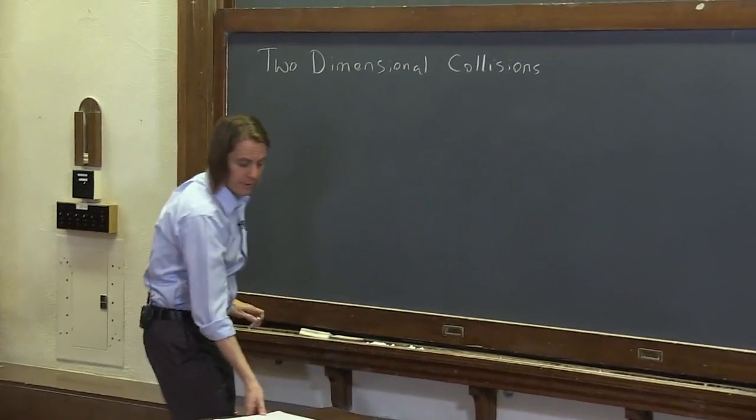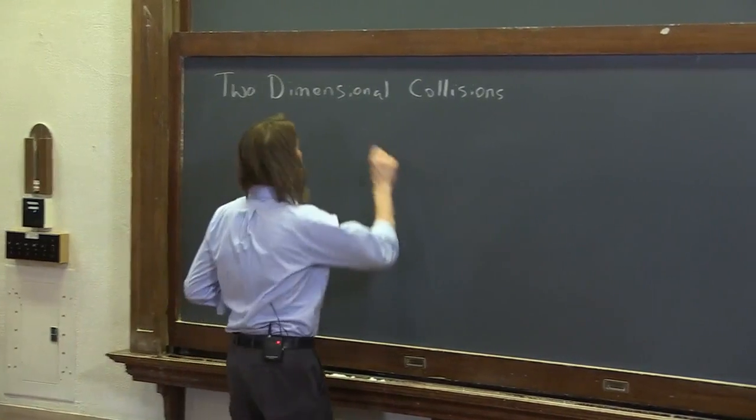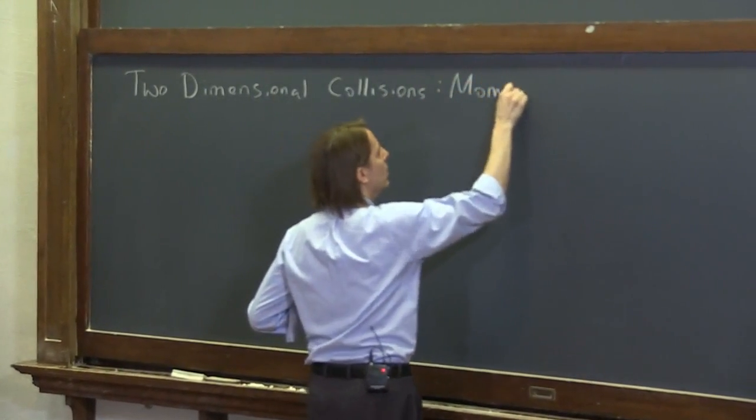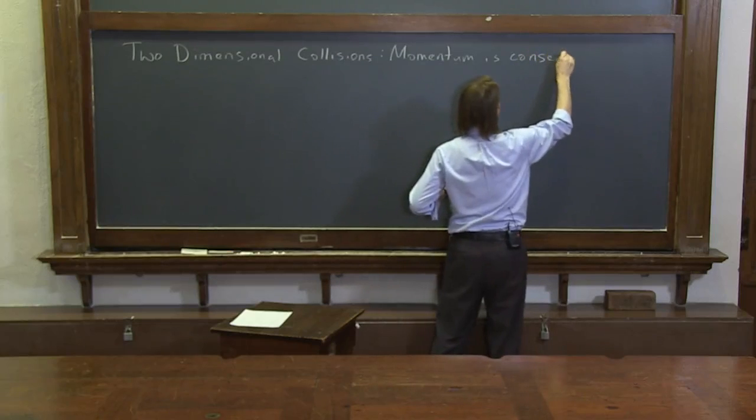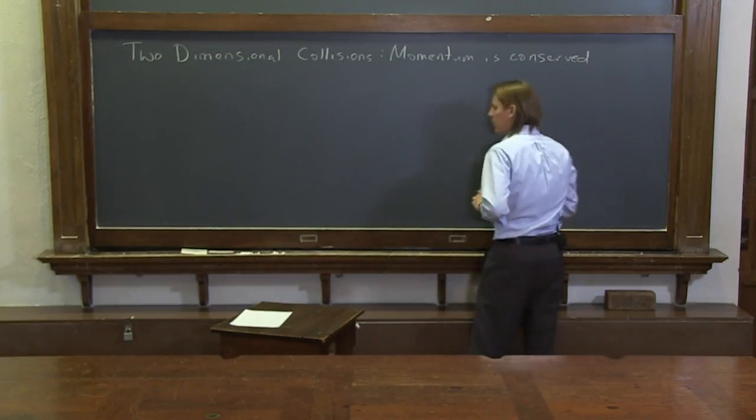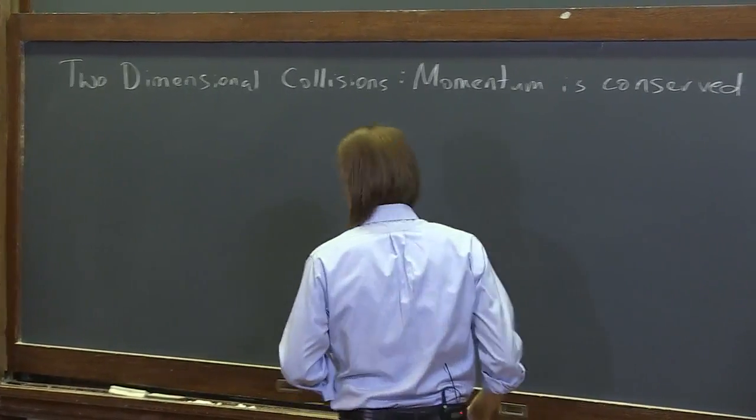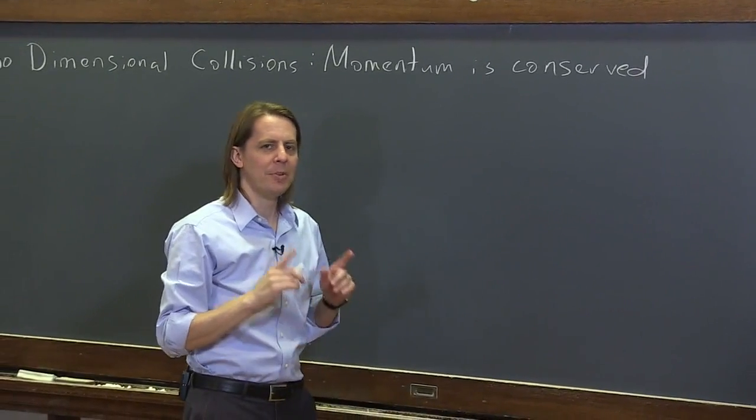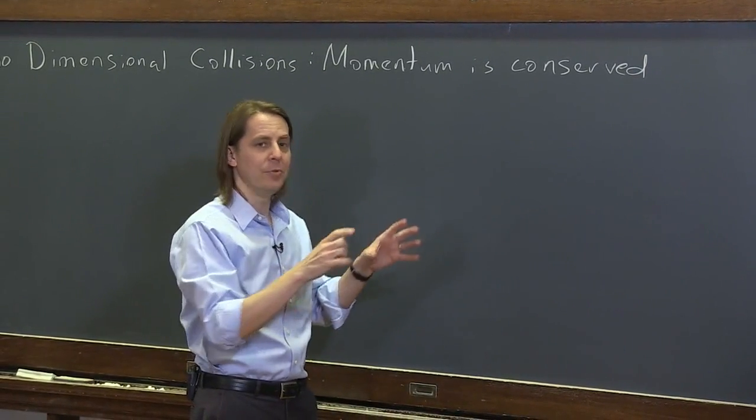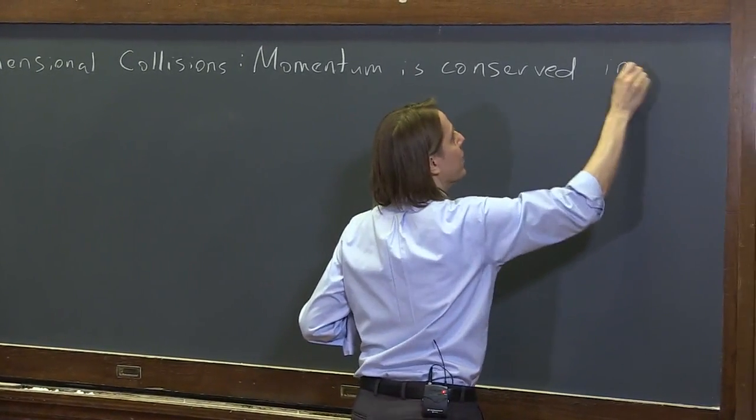So the main thing to know about this collision, like any collision, is momentum is conserved, of course. We're treating these as an isolated system so the change of momentum has to be zero. But we have to remember that momentum is conserved and momentum is a vector. And now we have things moving off in two different dimensions so it's conserved in each direction.